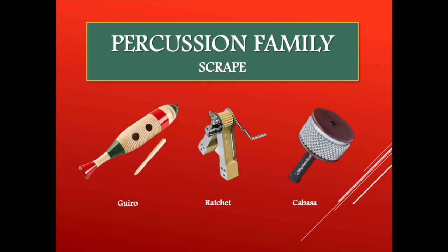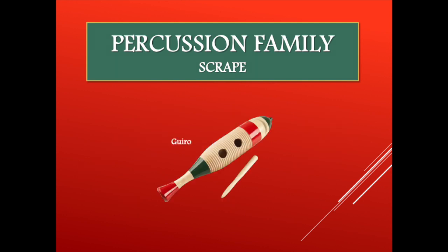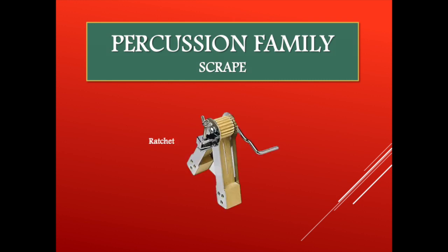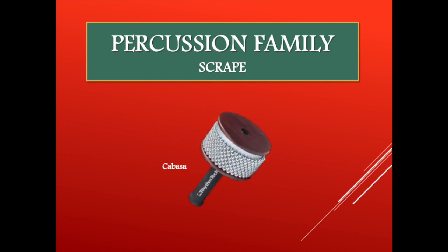The members of the scrape category make a rapid series of clicks when played. When the guiro is scraped with a stick across its bumpy surface, it makes this characteristic sound. When the ratchet is played, a crank turns a cog-like structure that spins, causing the wooden flaps to hit a surface inside. The metal beads on a cabasa make a characteristic sound when they rub against the metal surface.